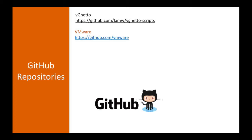Next up are GitHub repositories. I've highlighted a couple here — the Vghetto repository, which is William Lam's repository, and the main VMware one. GitHub is the main platform being used to push and manage code. Go and check out those two repositories to start with — there's a heap of scripts just in those. Before you go and write your own script to do something, check GitHub first, because no doubt someone has done something similar that you can take and adjust. GitHub for me ends up being like YouTube — you start looking and suddenly three or four hours later you've bookmarked all these repositories you had no idea about.